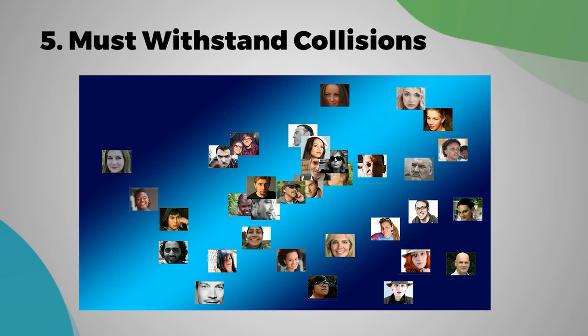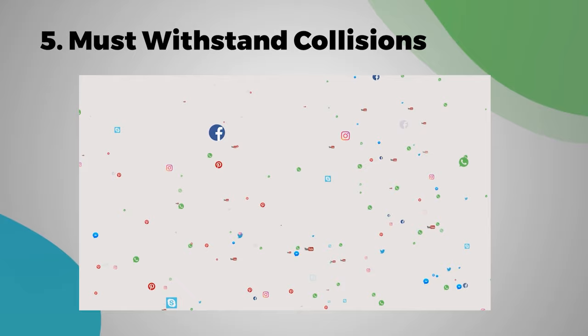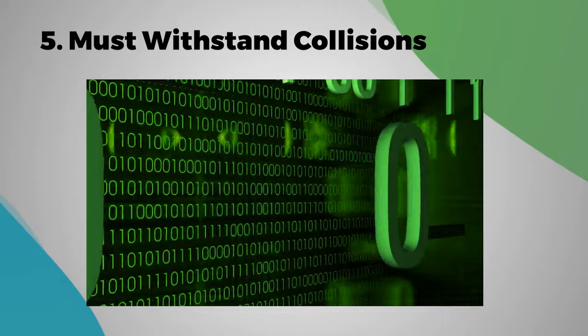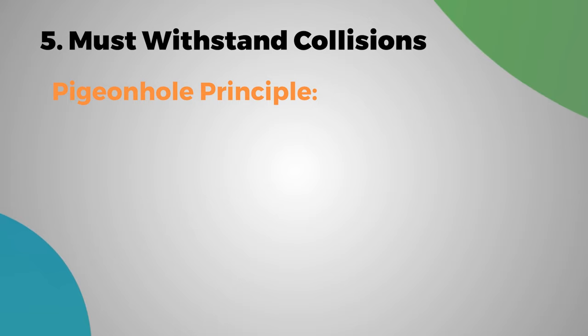There's tons and tons of books, there's terabytes of different photos being created every single day, videos, all this stuff. In essence, the amount of digital data we have is much greater, or we can possibly have, is much greater than the different number of variations of a 64-character representation. And so that means, in mathematics, there's a principle called the pigeonhole principle.